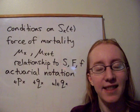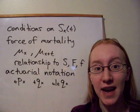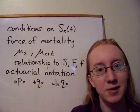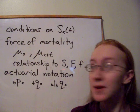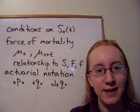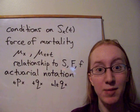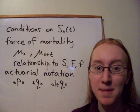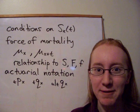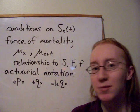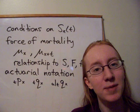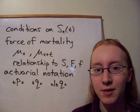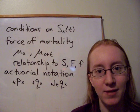The next thing we mentioned was the force of mortality, and this is a really important concept in actuarial science. We actually graphed what that looks like for real human mortality. There were a couple of interesting features of that graph, including the accident bump at around age 25. The force of mortality is useful because it's easy to model that directly and then turn that into the rest of the survival model.